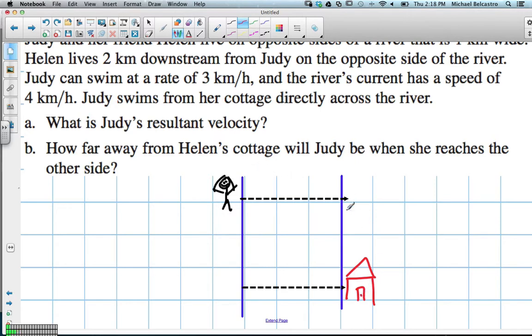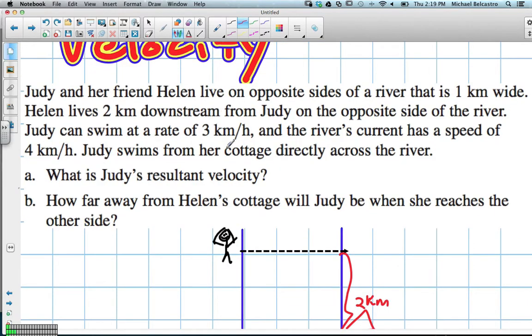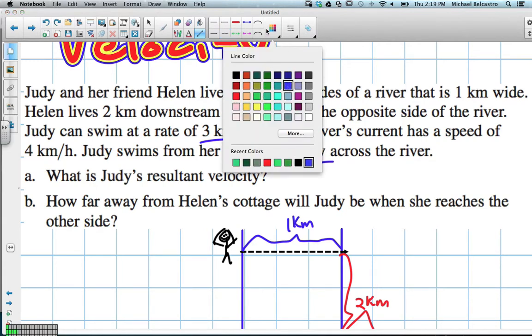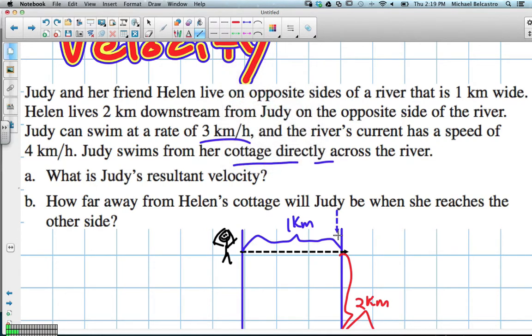So this distance here, according to our question, is two kilometers in length. It says, as we go up, the river is one kilometer wide, so the width of our river is an entire kilometer wide. It also says Judy can swim at a rate of three kilometers an hour, and Judy swims from her cottage directly across the river, so she follows this dotted line. The only problem is that the river has a current to it, and the current of the river goes at a speed of four kilometers an hour.